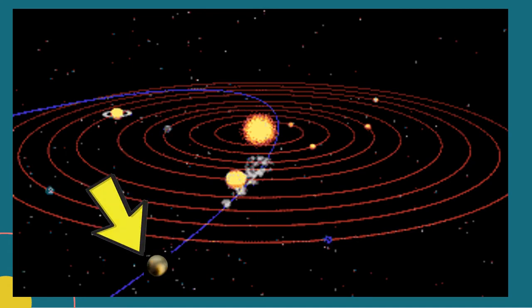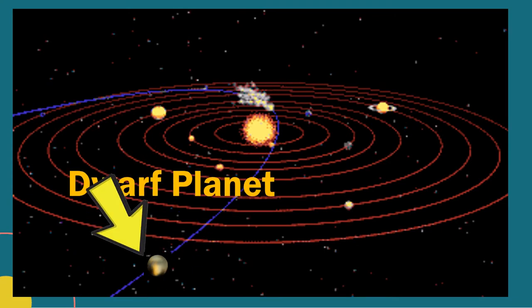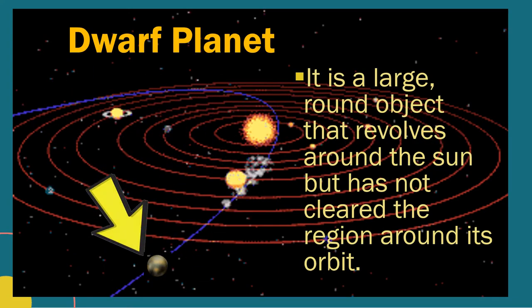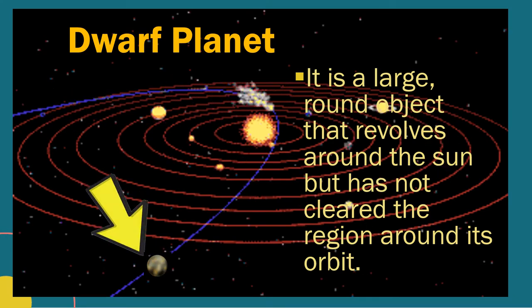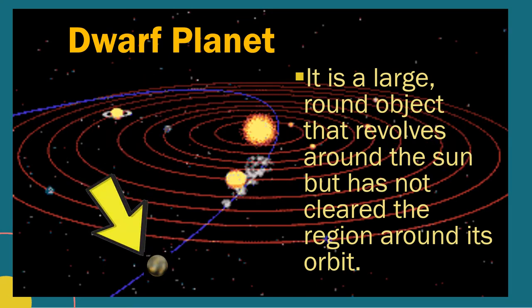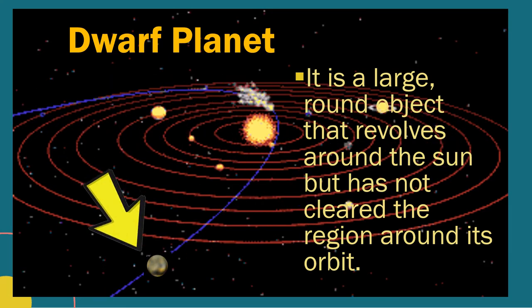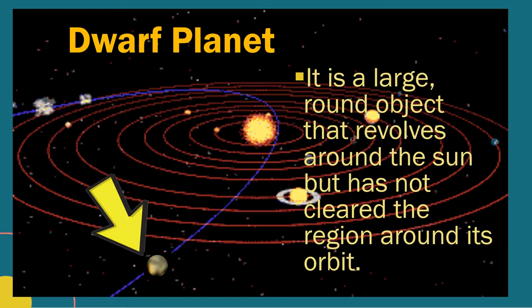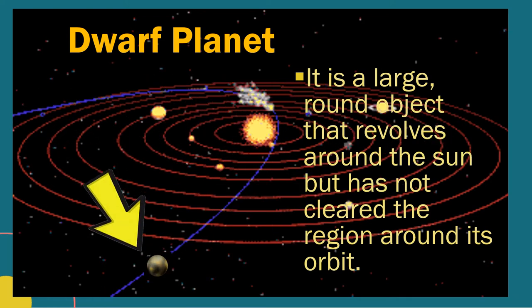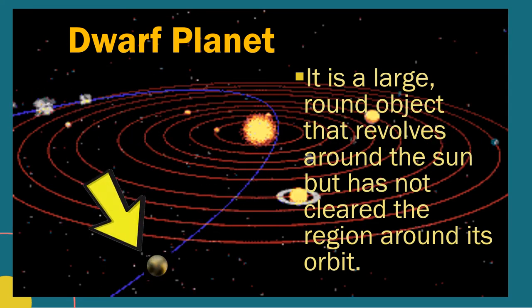Look at the small object pointed by the arrow. Did you know that it is a dwarf planet? Dwarf planet is a large round object that revolves around the Sun, but has not cleared the region around its orbit. In 1930, astronomer discovered Pluto. Pluto has an icy solid surface. Astronomers thought for a long time that Pluto was the ninth planet, the only outer planet that is not a gas giant.